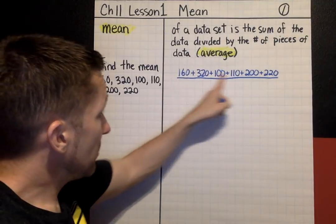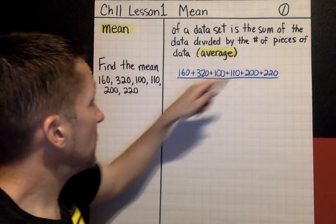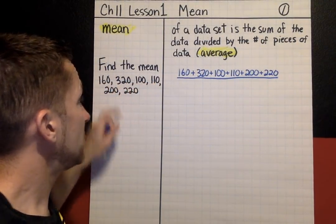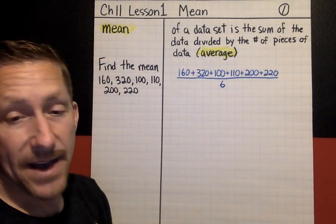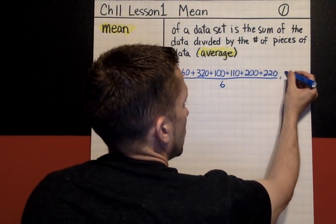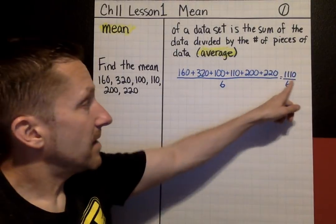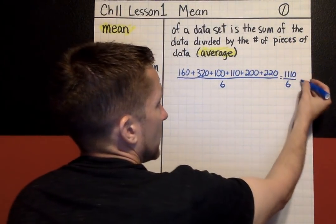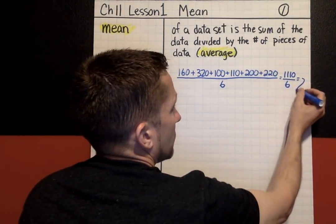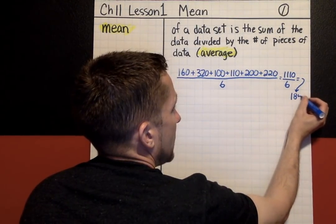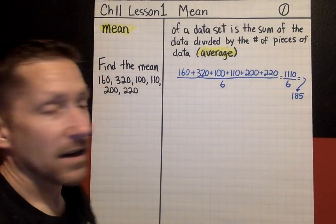I'll count. Here's the sum of all the values, the sum of the data, and I want to divide that by the number of pieces of data. I've got 1, 2, 3, 4, 5, 6 pieces of data. If I add all that up, I get 1,110 over 6. That line means divide, so if I divide 1,110 divided by 6, I get 185. So the mean of this data, or the average of this data, would be 185.